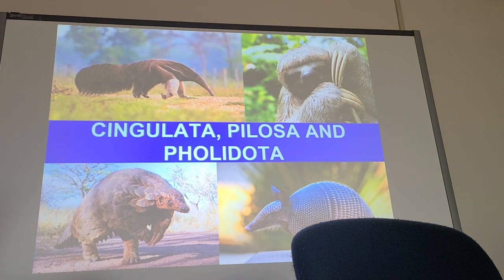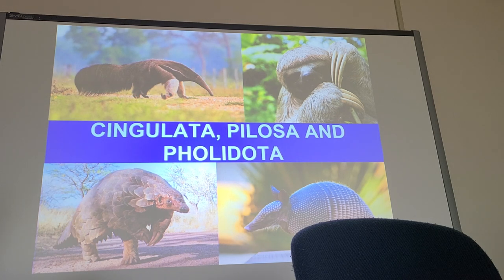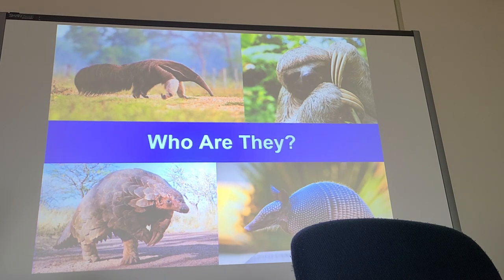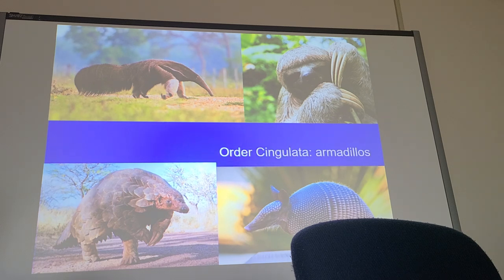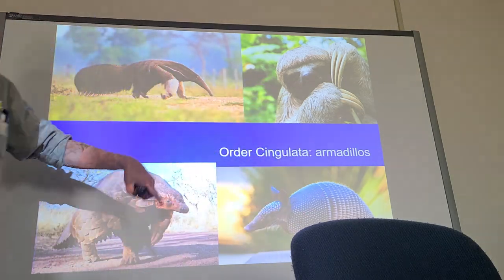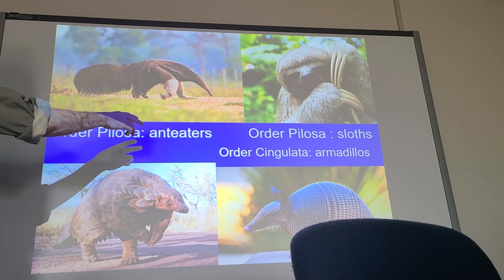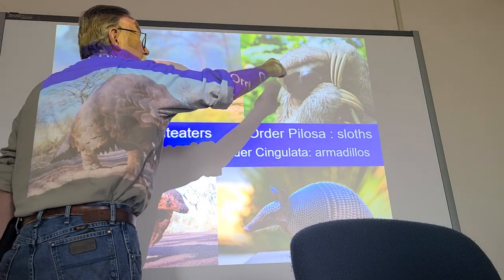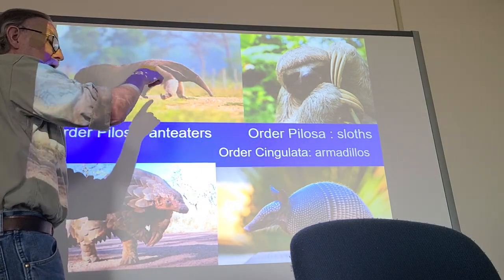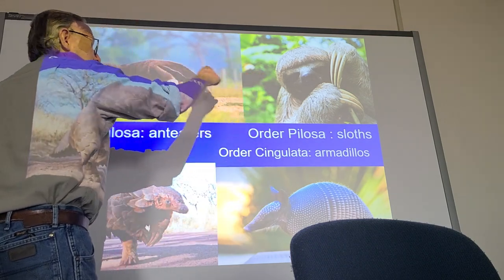Now the next three orders: Cingulata, Pilosa, and Pholidota. Some of these are more familiar to you — at least one you've seen dead on the roadside, and at least two you've seen their skulls. Cingulata are the armadillos. Pilosa is broken into two groups: anteaters and sloths. An armadillo is actually pretty closely related to a sloth and an anteater, believe it or not.